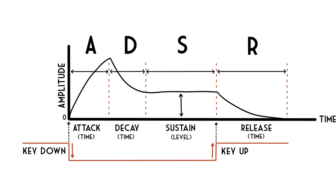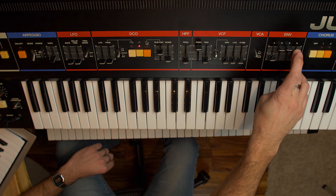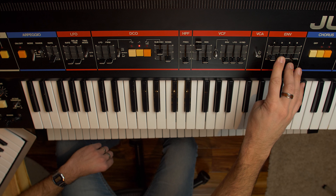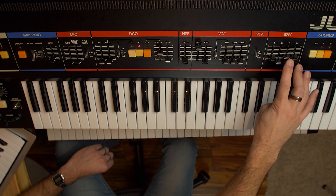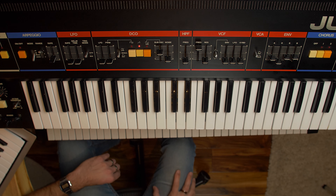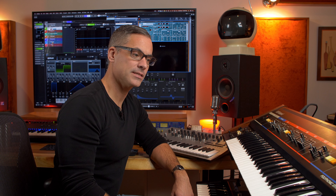Let's talk about decay and sustain. Attack is a time value, and decay is also a time value. Decay gives you the ability to have the sound go to full volume first and then drop off to whatever the sustain level is. If I set the decay as fast as it can go, it will very quickly drop down after reaching full volume to whatever the sustain level is. So: attack = time, decay = time, sustain = a level (volume) control, and release = a time value when the note is released. Decay only really matters if your sustain is somewhere below full volume.